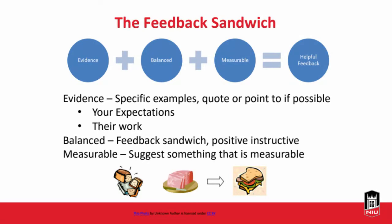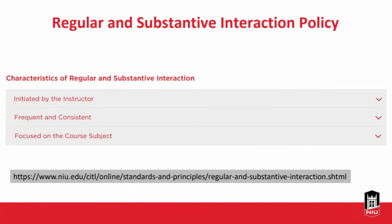We also want to keep it measurable — how do we know if they've hit the benchmark or met our expectations? Give them specific criteria, something they can actually analyze, look at, and understand. If we combine all three of those elements — evidence, balance, and measurable feedback — hopefully it will result in a wonderful feedback sandwich.